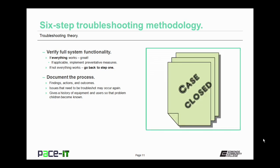This is where you need to document the process. You document findings, actions, and outcomes. This is so if the problem occurs again, there is a document that will walk somebody through an easy way to resolve the issue. It also gives a history of equipment and users so that problem children can become known. Both positive and negative outcomes need to be documented, so that other people don't make the same mistakes that you might have made.